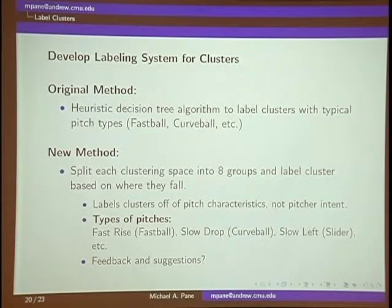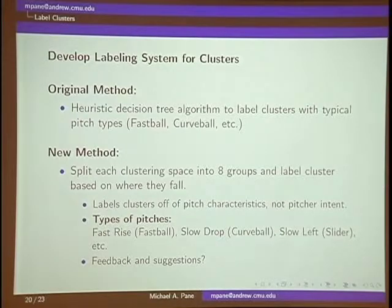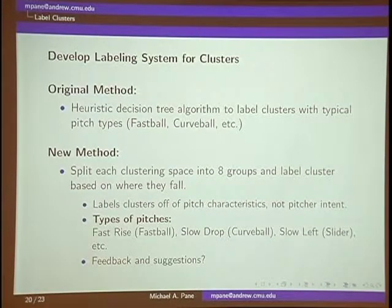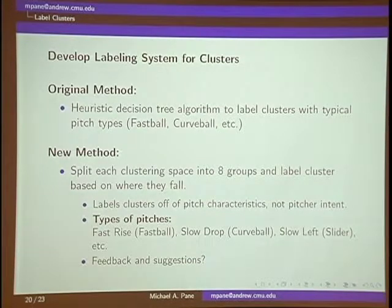We've recently been working on a new way to label pitches and we definitely want feedback on this. We've been collaborating with Dave Cameron at FanGraphs to get some ideas. We label pitches in a more descriptive way of how the pitch actually performs — we split each clustering space into eight groups and label pitches based on where their cluster falls. So instead of a fastball label, we might call it a 'fast rise'; a curveball might be 'slow drop'; a slider might be 'slow left.' Instead of being controversial about whether it's a curveball or slider, we purely describe what the pitch is doing.